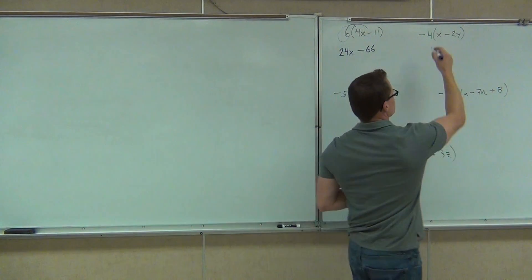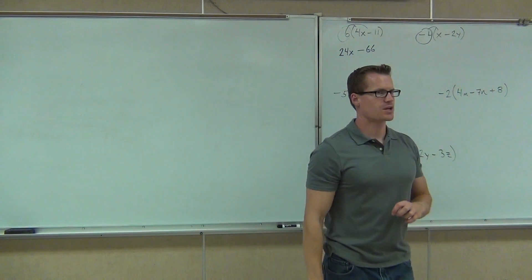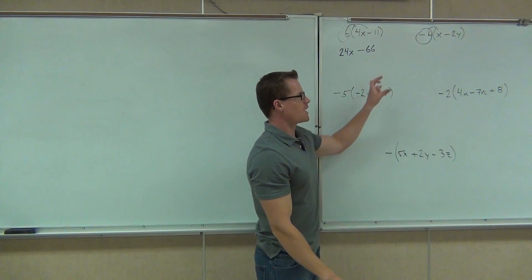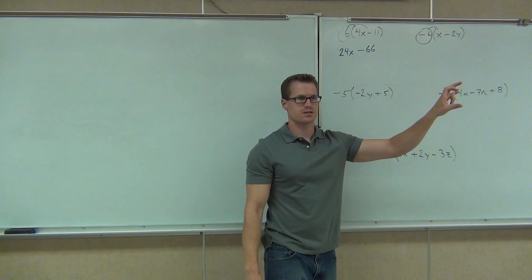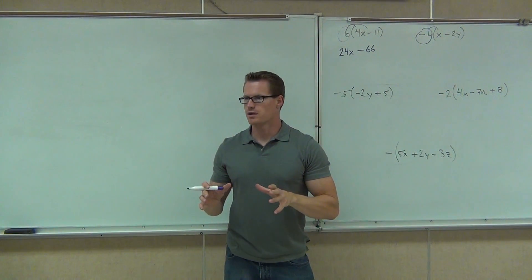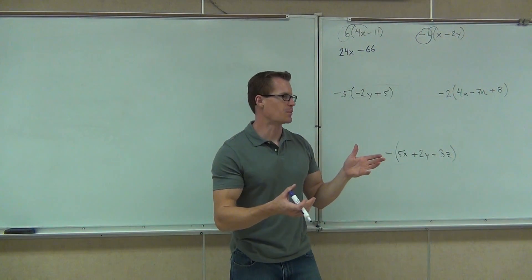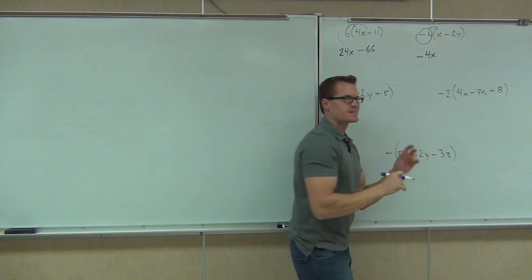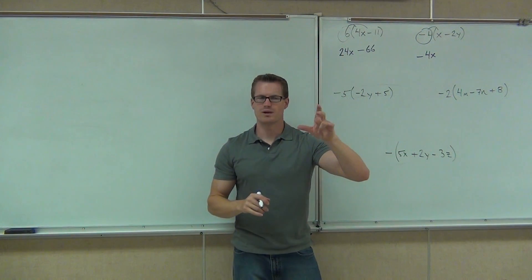Okay, next up, we'll distribute our negative 4. Again, we circle the number with the sign. So when we distribute negative 4 — negative 4 times positive x — you have to be getting negative 4x. Did you get negative 4x? Almost everybody gets the first term right. That one's not the one where people mess up. Usually, this is going to work out just fine — you get negative 4x. It's typically the second term that people mess up on because of the signs.